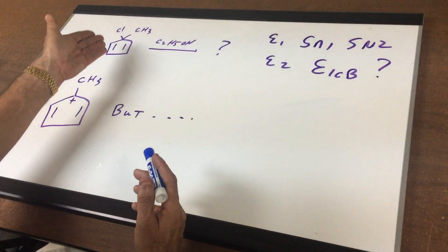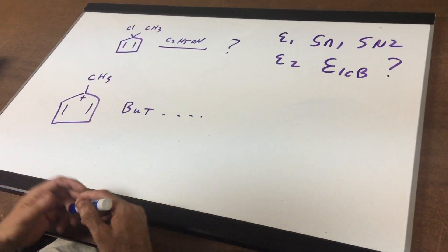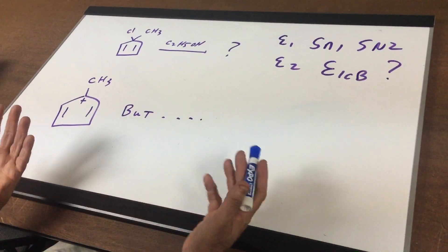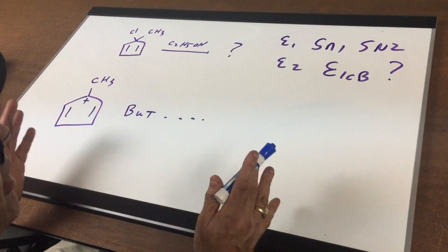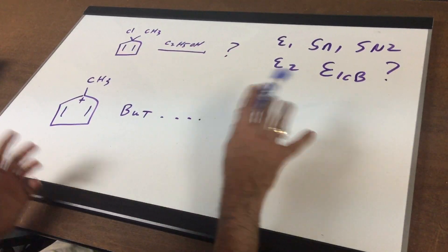First of all, you can't put a double bond inside here. You would break the valence of carbon, so there's no double bond. So that knocks them out.